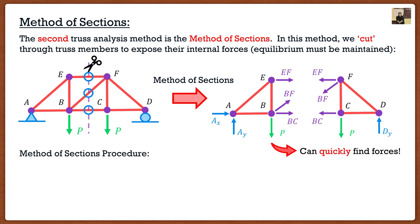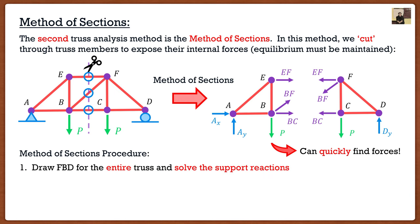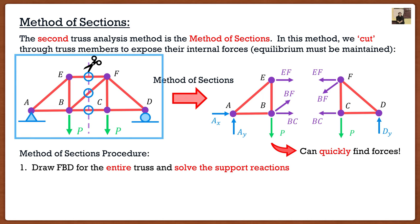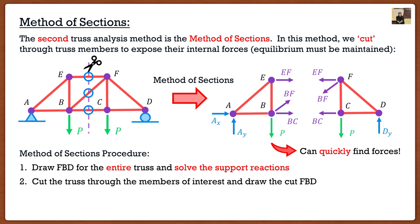The method of sections follows a nice procedure just like the method of joints. The first step — and this goes for everything moving forward — is you always want to solve for the support conditions first. In trusses we always solve for support conditions before we cut the truss. So I would use the uncut free body diagram to find those. Once I do that and I look at my cut free body diagram, AX and AY are now known, not unknown.